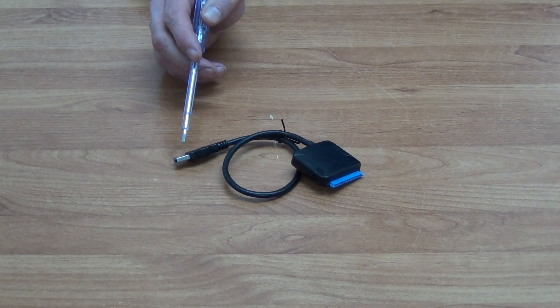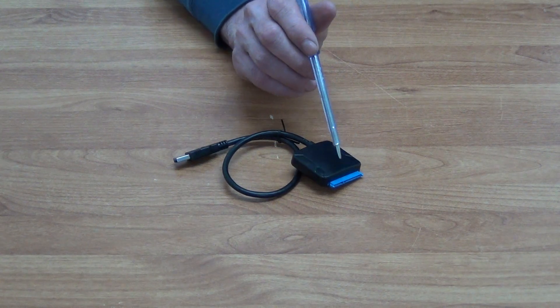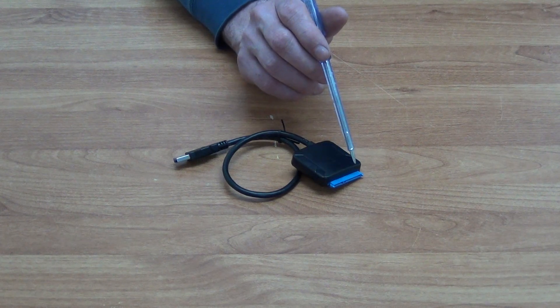We have a USB connection here that normally comes off your device and on the far side here we have the SATA connections. The SATA connection is broken in two parts. There's a data element of it and also the power element of it.